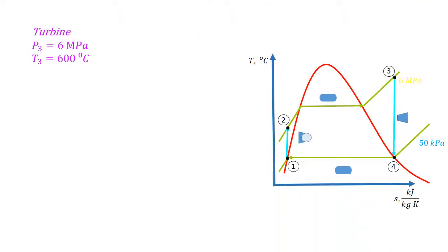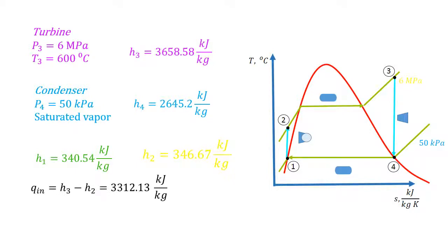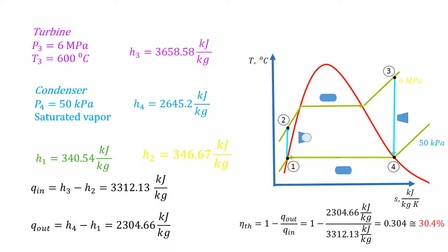For the turbine, using the superheated water table, the enthalpy is the following. For the condenser, using the saturated water table, the enthalpy value is the following. Now that we have all the enthalpy values, we can calculate the heat in and heat out to calculate the efficiency. The heat in is 3312.13 kJ per kg. The heat out is 2304.66 kJ per kg. And the efficiency is 30.4%. The actual steam power efficiency is lower than this value due to all the friction present in the system.